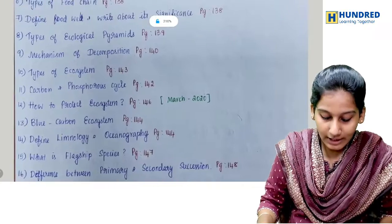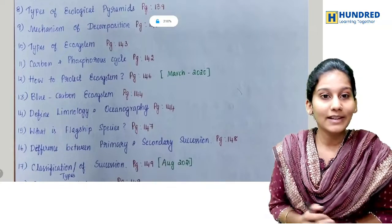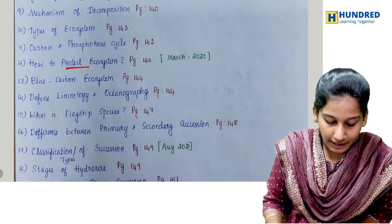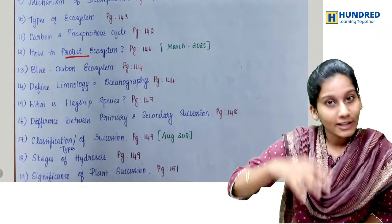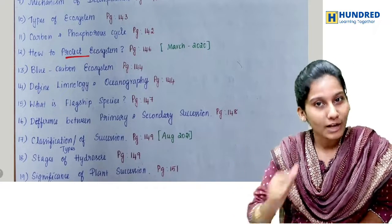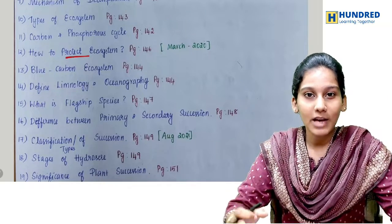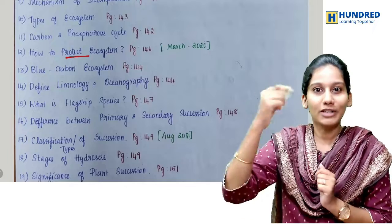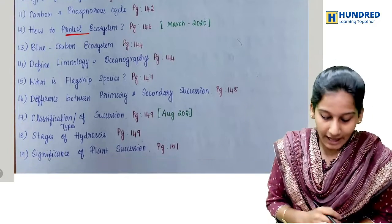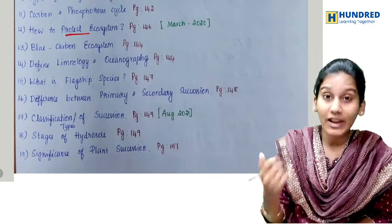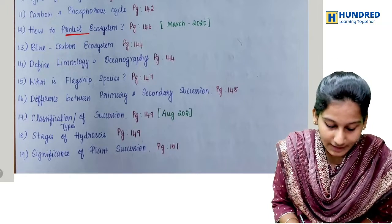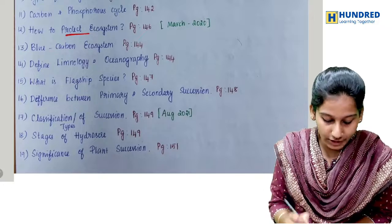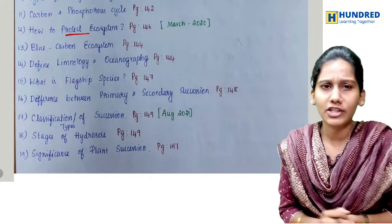You can also see March 2020 — how to protect the ecosystem. There are inside questions and book back questions. Start with book back first. Then cover primary and secondary succession, flagship species.